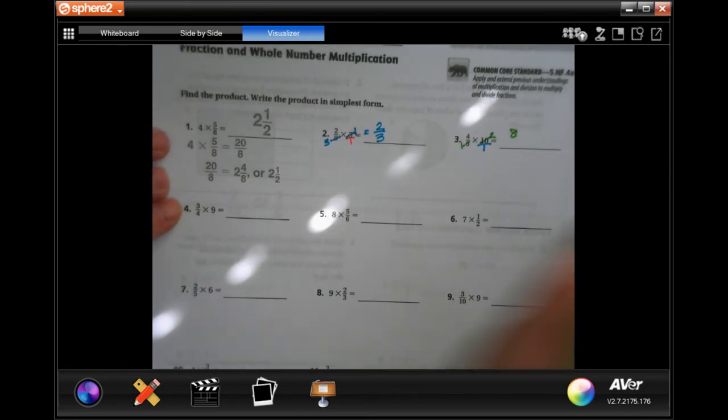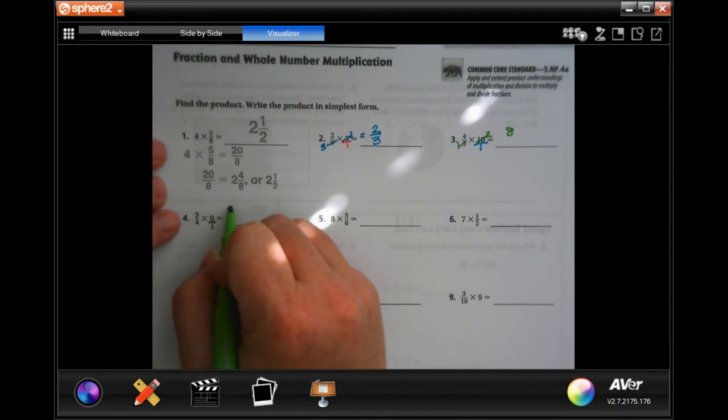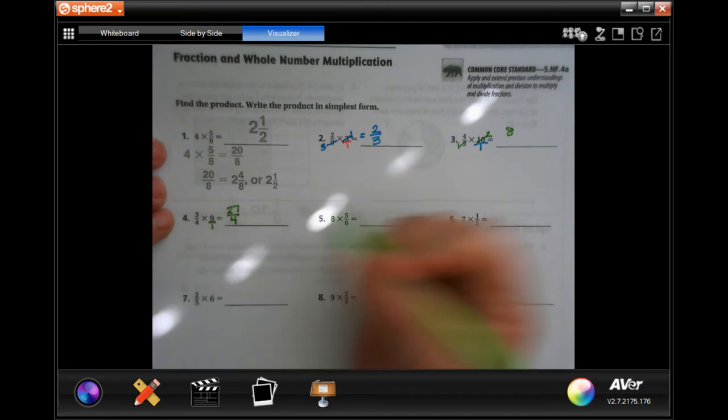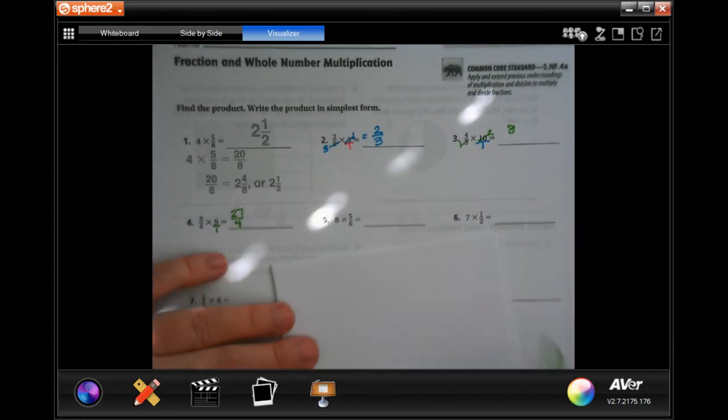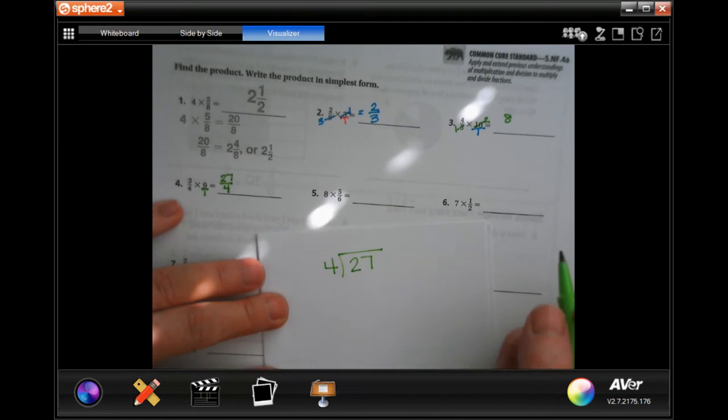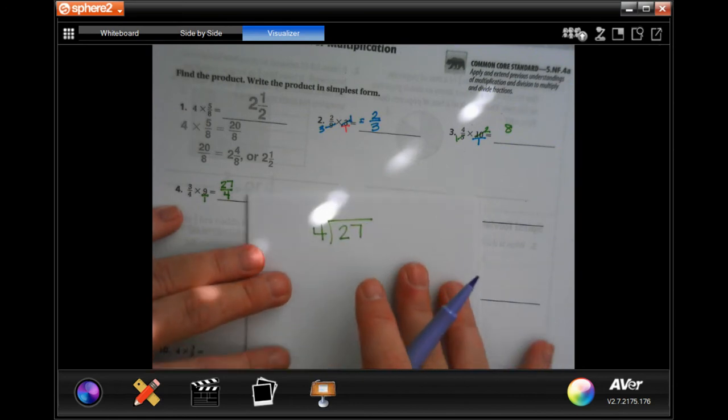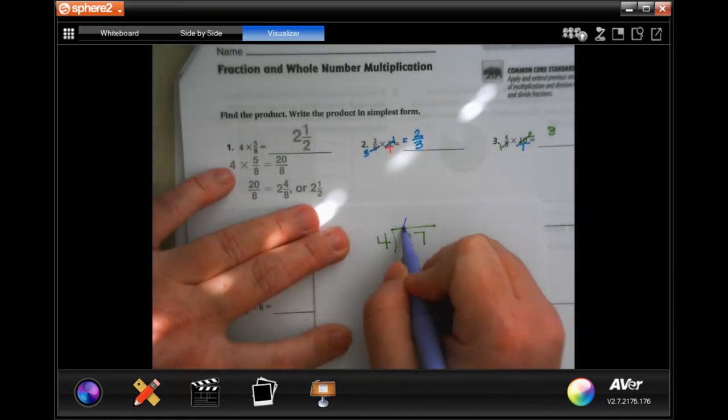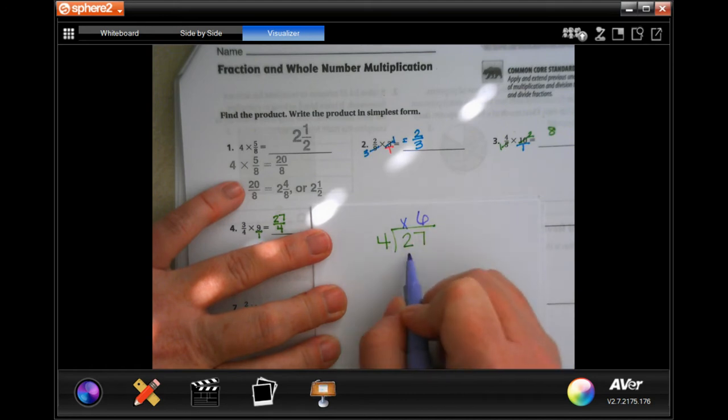Now this one's going to be a little bit trickier because we can't reduce anything. So now I just have to go 3 times 9 is 27, and it's going to be over 4 because 4 times 1 is 4. So now I have to do the part where we divide. If you can mentally divide, good for you, but if you can't, then you have to know that the top number always goes inside the box, and the bottom number goes outside the box. Now, I'm going to color code this because I'm going to show you exactly where each of our answer numbers go. 4 is not going to go into 2. 4 will go into 27, 6 times. 6 times 4 is 24, subtract, and we would get 3.